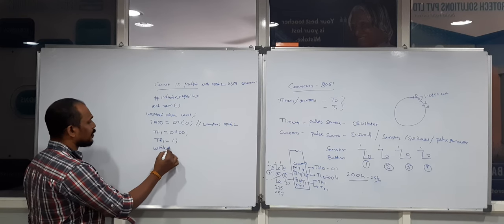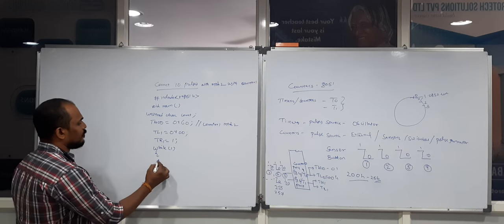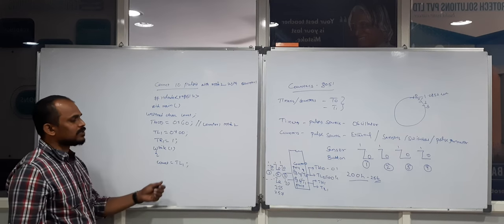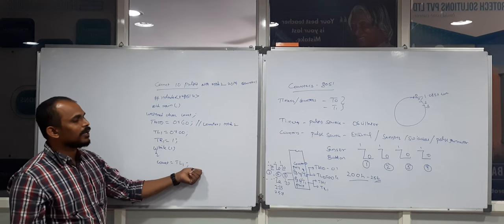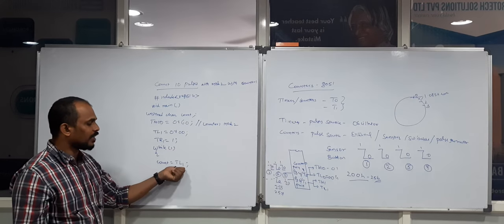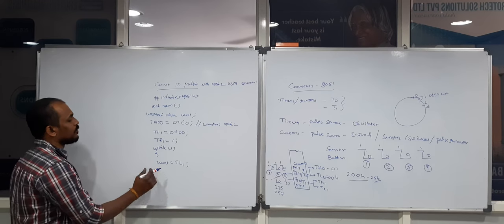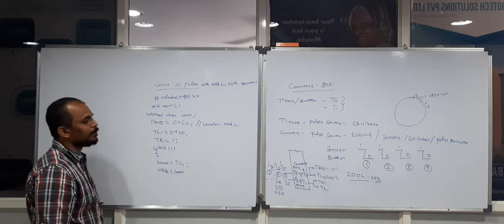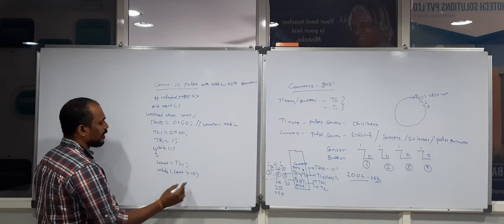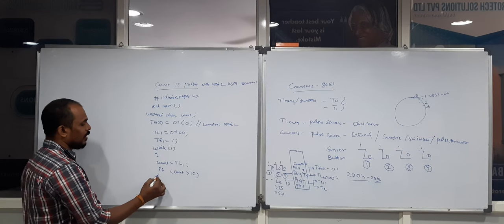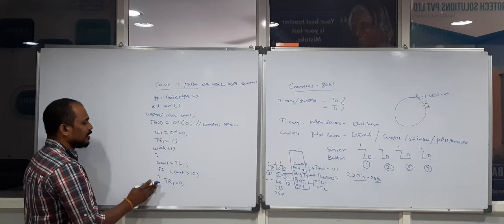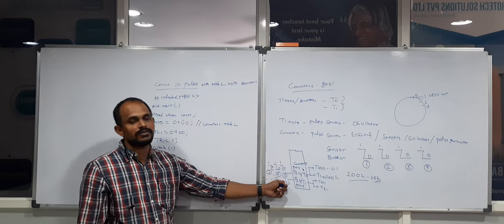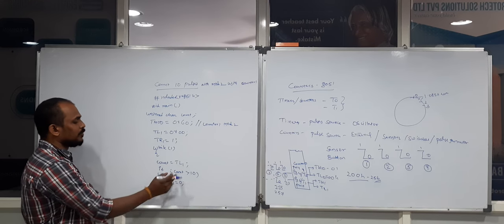With Counter 1 running, we enter an infinite loop. Inside the loop, the current value of TL1 is copied to the variable 'count'. If no external pulse is given, TL1 remains 0; as external pulses arrive, TL1 keeps incrementing. A condition is added: if 'count' is greater than 10, the counter is stopped. After 10 pulses, even if more external pulses are given, the counter no longer accepts them.